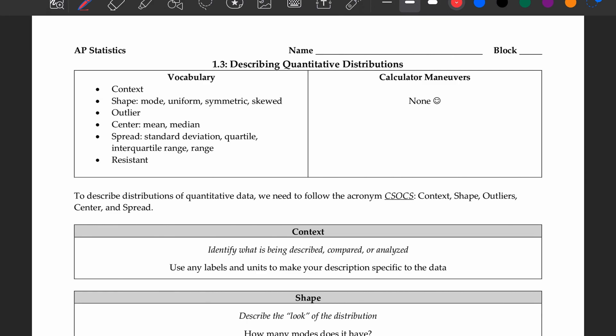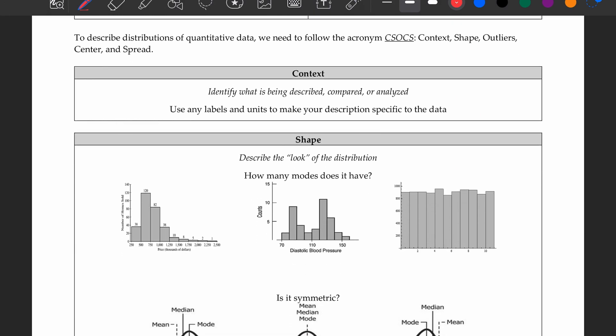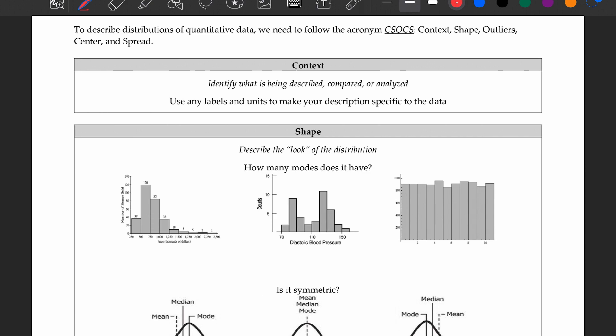So to get started, we're going to jump right into talking about this acronym I like to use to help me remember how to describe all the components of different distributions handed to me. I say it as C-SOCKS. It stands for context, shape, outliers, center, and spread. I start with the context because it's important and it makes your description specific to your data.